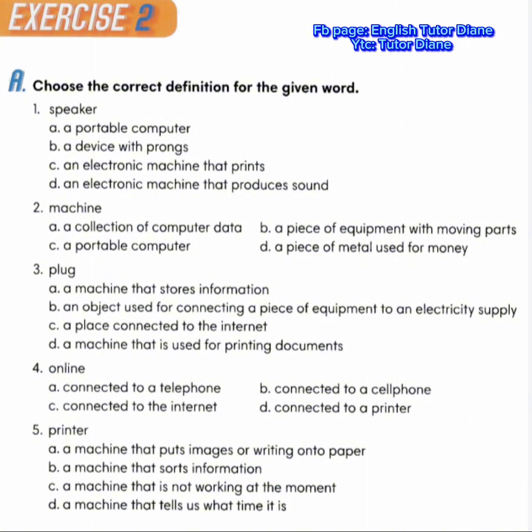Exercise 2, A. Choose the correct definition for the given word. Speaker — what is a speaker? A, a portable computer. B, a device with prongs. C, an electronic machine that prints. D, an electronic machine that produces sound. Correct answer is D, an electronic machine that produces sound. Number 2, machine — what is a machine? A, collection of computer data. B, a piece of equipment with moving parts. C, a portable computer. D, a piece of metal used for money. Correct answer is B, a piece of equipment with moving parts.